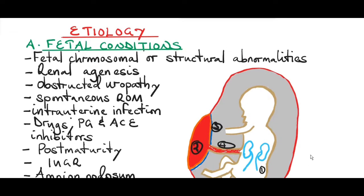Causes of oligohydramnios can be fetal or maternal conditions. For fetal conditions, you have fetal chromosomal or structural abnormalities. You can have renal agenesis, where one or both kidneys don't form — so if there are no kidneys, there'll be no urine output, meaning reduced amniotic fluid. You can also have obstructed uropathy, where something obstructs the ureters, preventing urine outflow, resulting in reduced amniotic fluid.